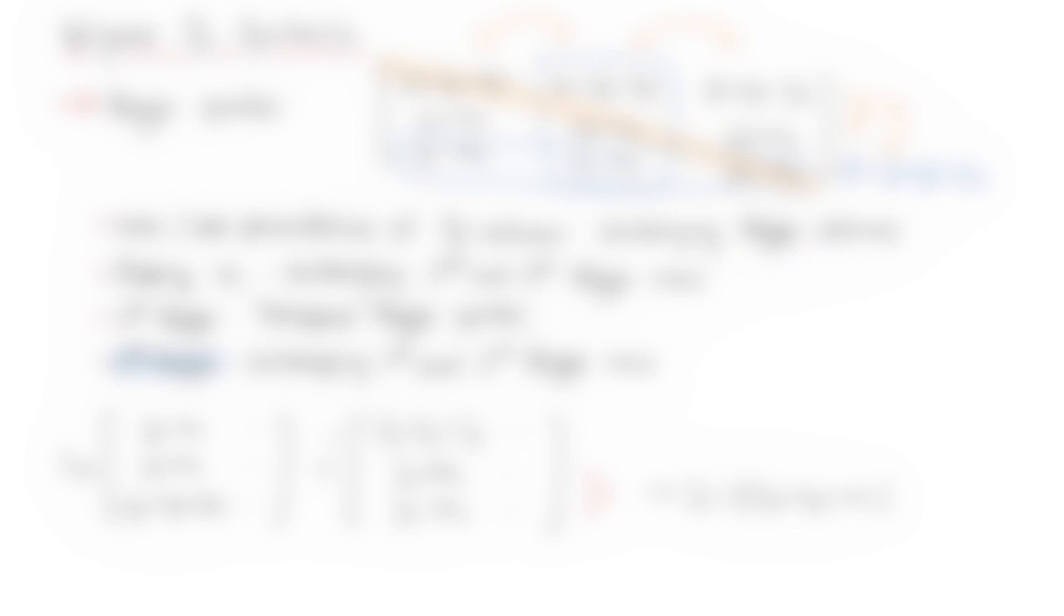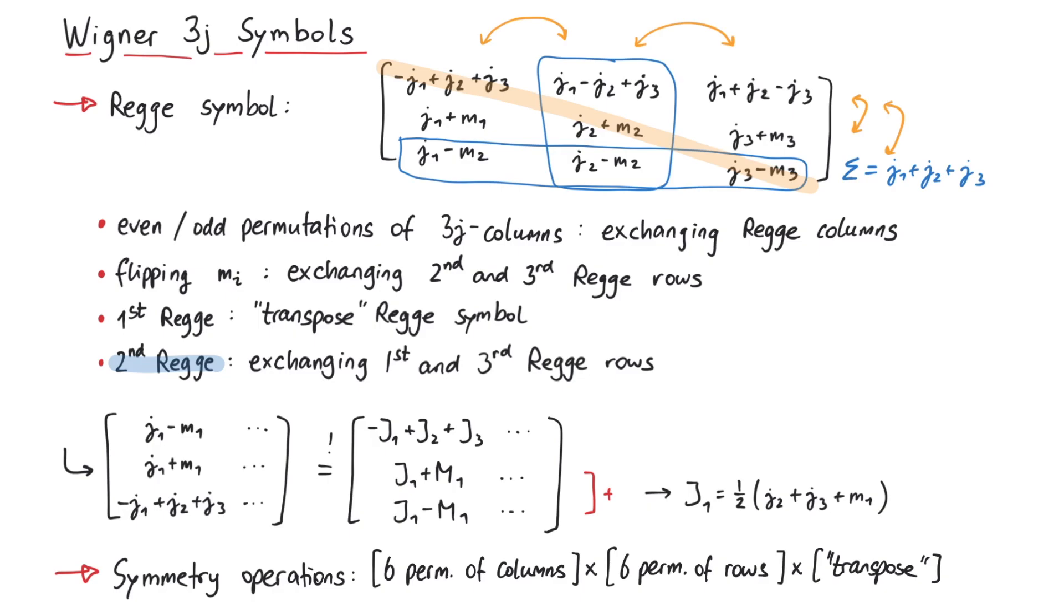So we have six ways of permuting the columns, six ways of permuting the rows, and the mirroring along the diagonal, which leave the Regge symbol invariant. Therefore, there are 72 symmetry operations.